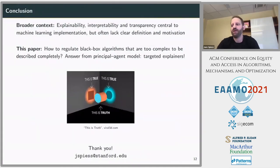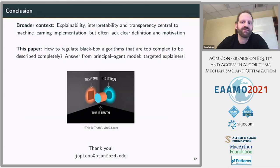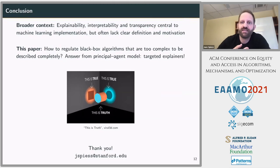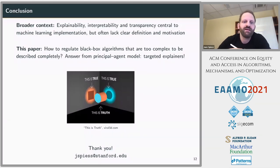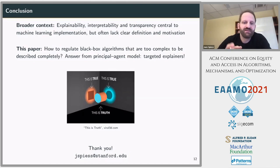Let me now summarize. Our paper exists in a broader context of discussions around fairness, explainability, interpretability, and transparency of algorithms, which we think are central to safe and fair implementation of machine learning. However, these terms often lack a very clear definition — we all agree they are good properties to have, but it's not necessarily clear what they mean in a specific context. We tackle that question in one specific application: an economic model with a principal-agent conflict. We answer how we should regulate black box algorithms that are too complex to be fully described by saying we should regulate them based not just on explainers, but on specific targeted explainers. Thanks again to the organizers for having us and thanks to the audience for listening.